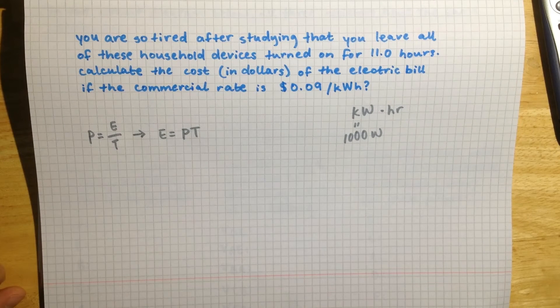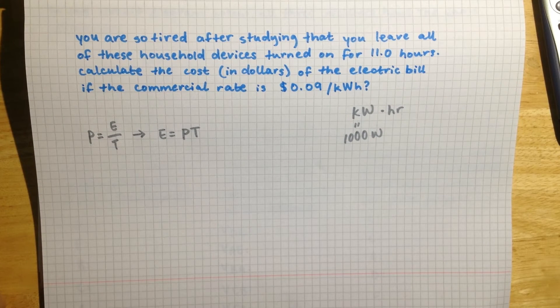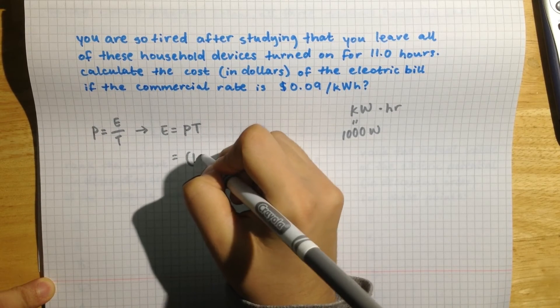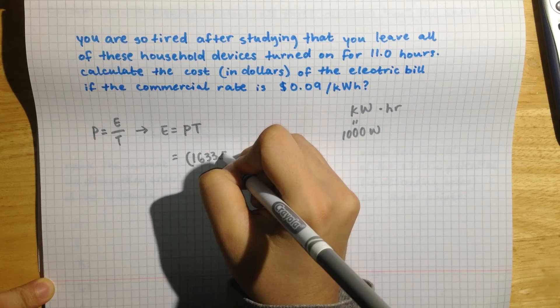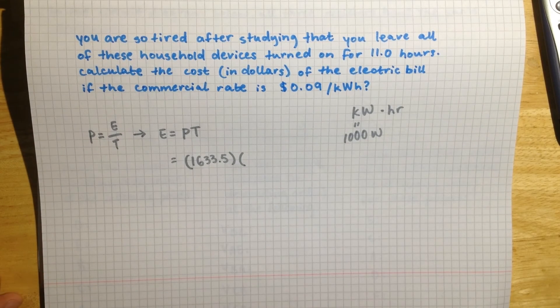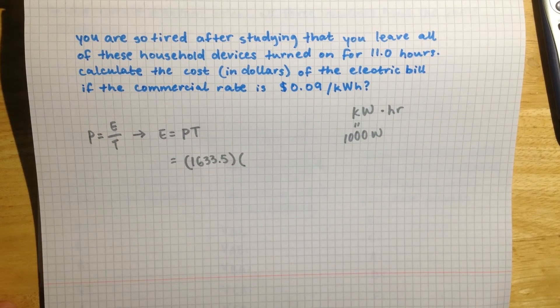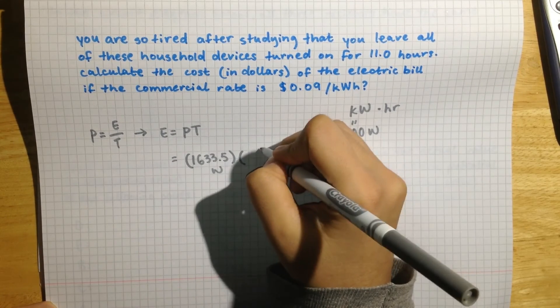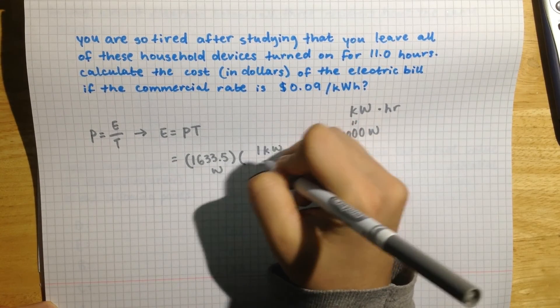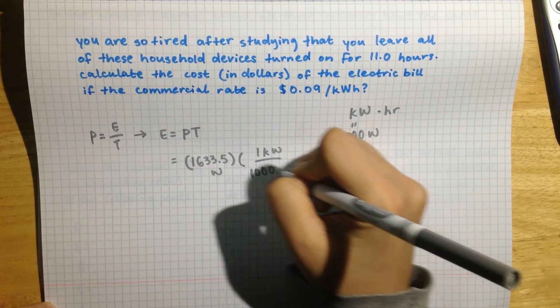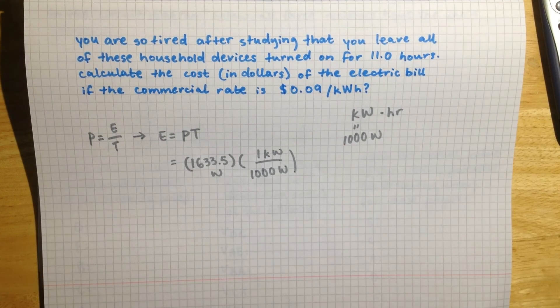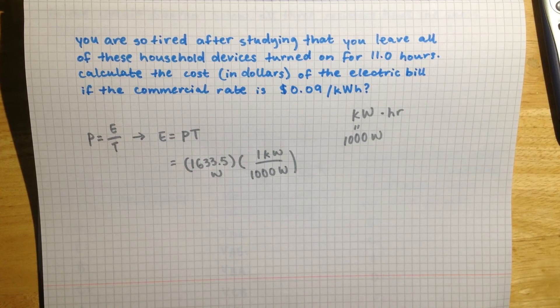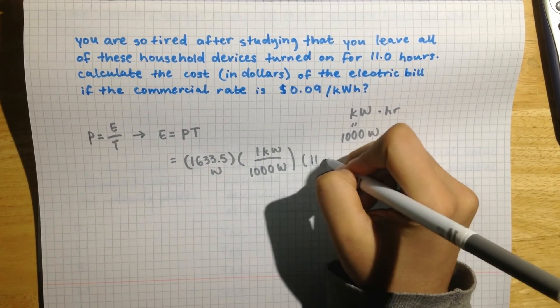So P, we calculated previously in the first part of the question, the power was 1633.5 watts, and we have to multiply this by—this is in watts, correct? So 1 kilowatt is equal to 1000 watts. So that is our little conversion calculation right there. And then we can just multiply this by 11 hours.